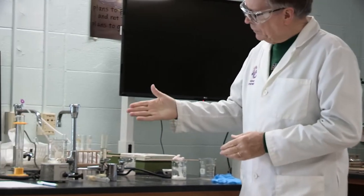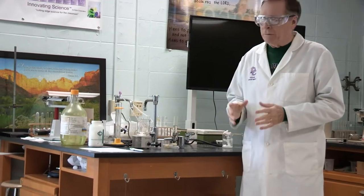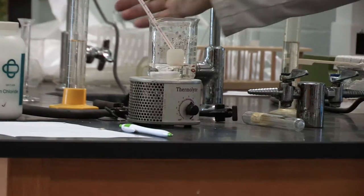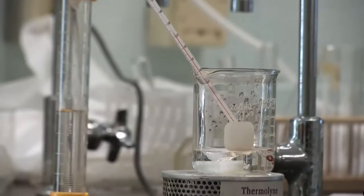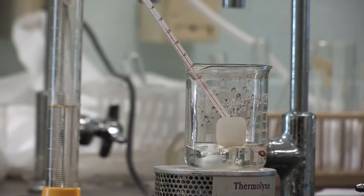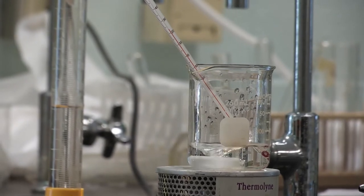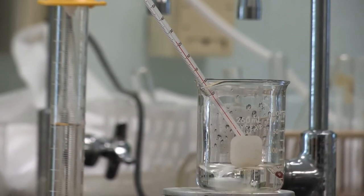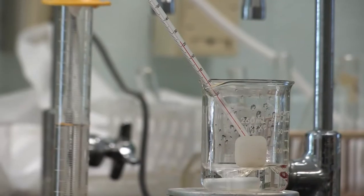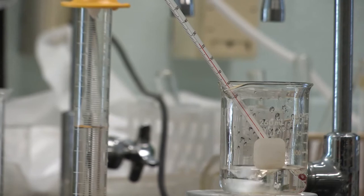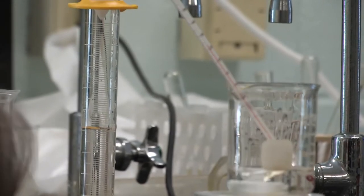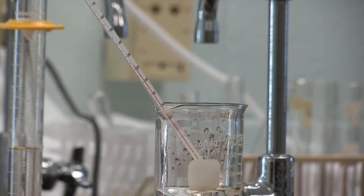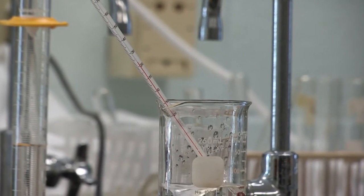Here's our setup. Here's a beaker of water. I have 50 milliliters. I have a stir bar in here, and I'm stirring it, and I have a thermometer in there to record the temperature. Can you see what the temperature is? It looks about 23. Let's say 23.